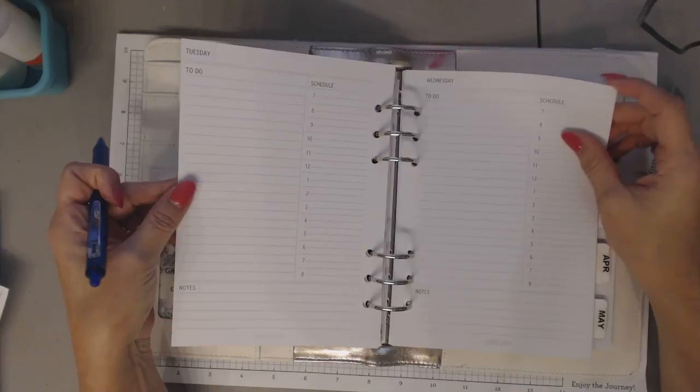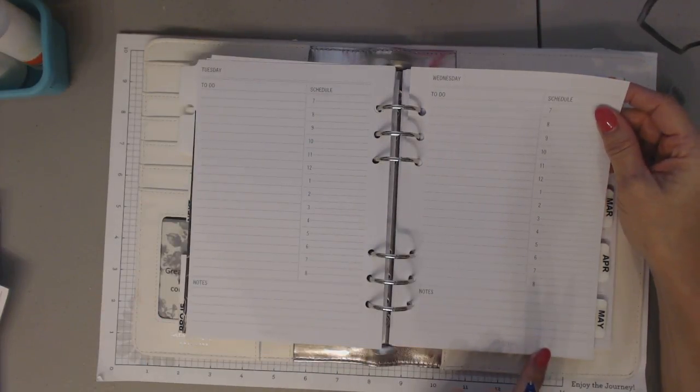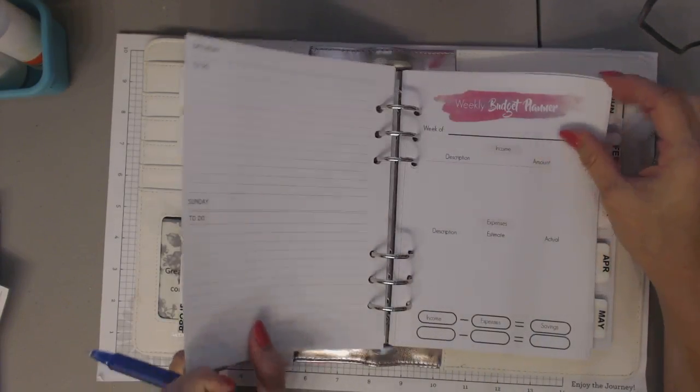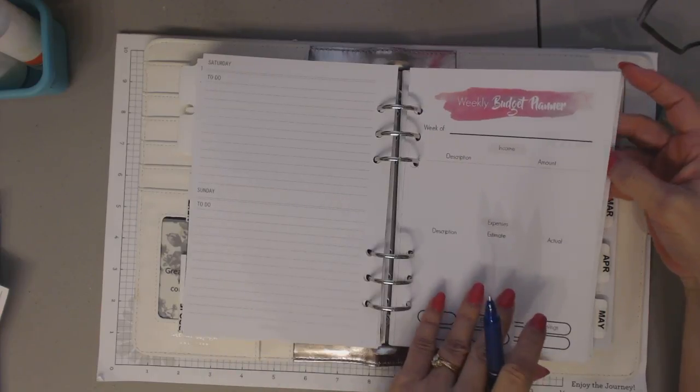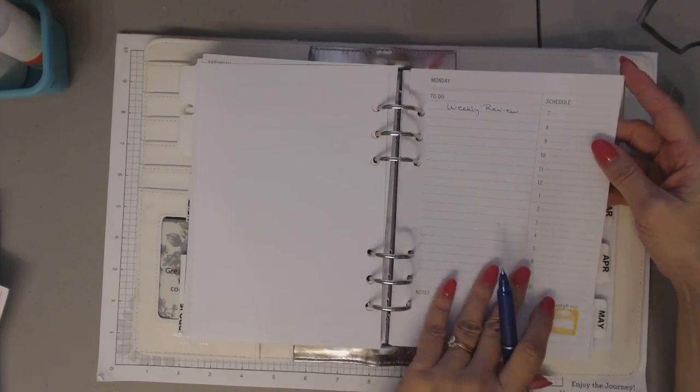But the sheets are really nice. I think these are by Carpe Diem. You can buy them in a package. And I really like those. And then again, the next week, there's the pages in the weekly budget.